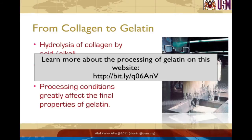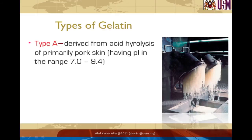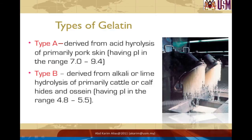If you are interested in learning more about the processing of collagen to gelatin, there is a website where you can find more detail. Now let's look at the different types of commercial gelatin available. There are several varieties, the composition of which depends on the source of collagen and the hydrolytic treatment used. Type A uses an acid process and is mainly used for pig skin, fish skin, and sometimes bone raw materials, resulting in gelatin with an isoelectric point in the range of seven to nine.